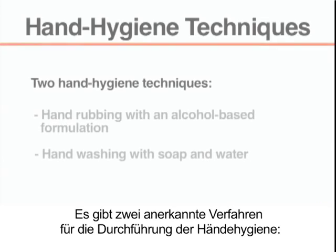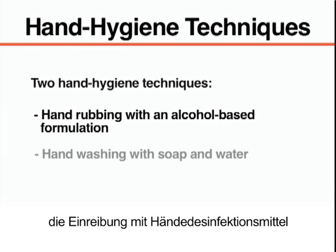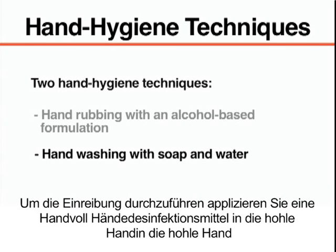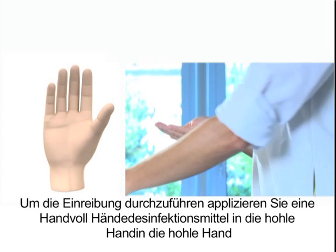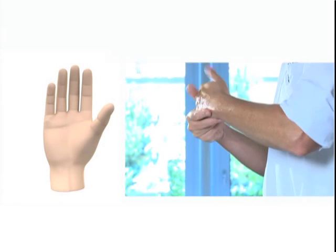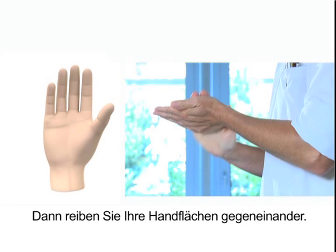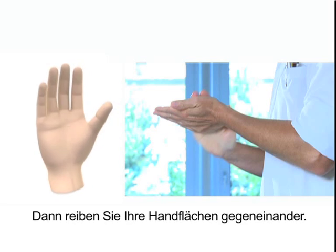There are two recognized techniques for performing hand hygiene: hand rubbing with an alcohol-based formulation and hand washing with soap and water. To perform hand rubbing, apply a palmful of hand rub formulation to a cupped hand and rub your hands together to cover all surfaces, then rub your hands again palm to palm.